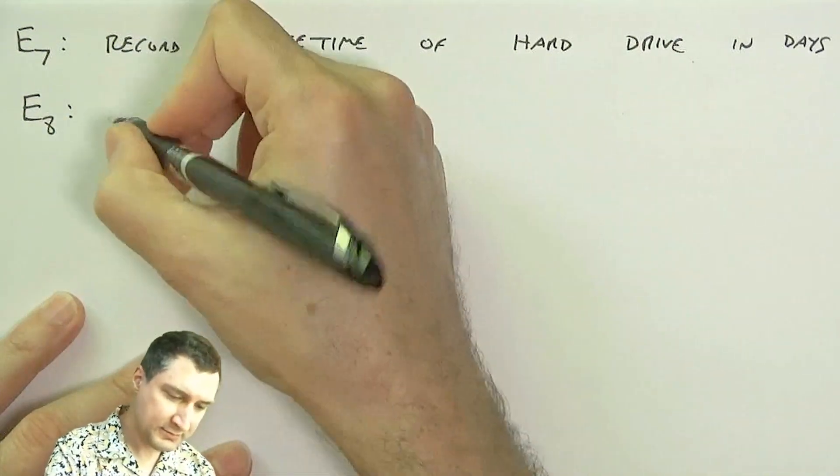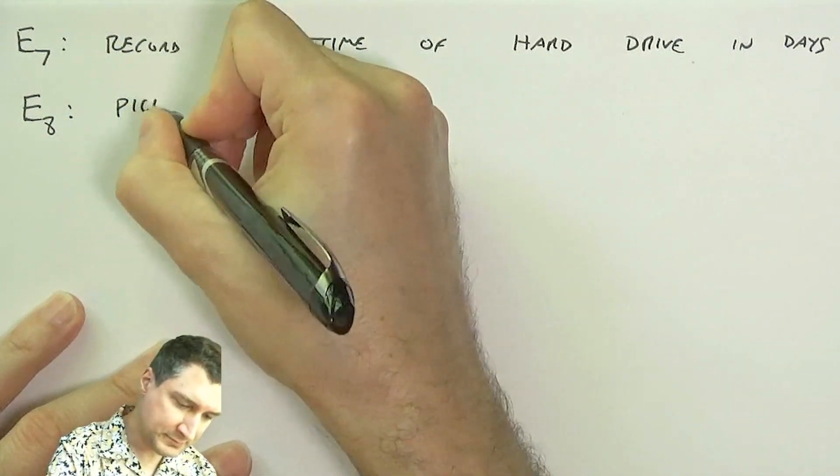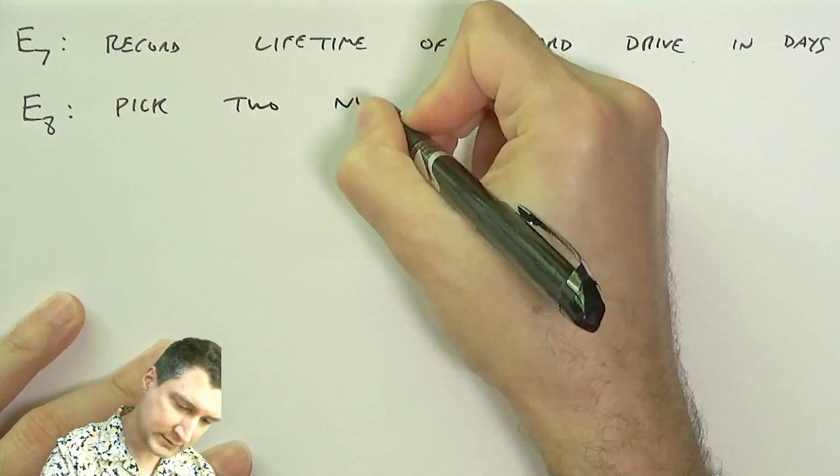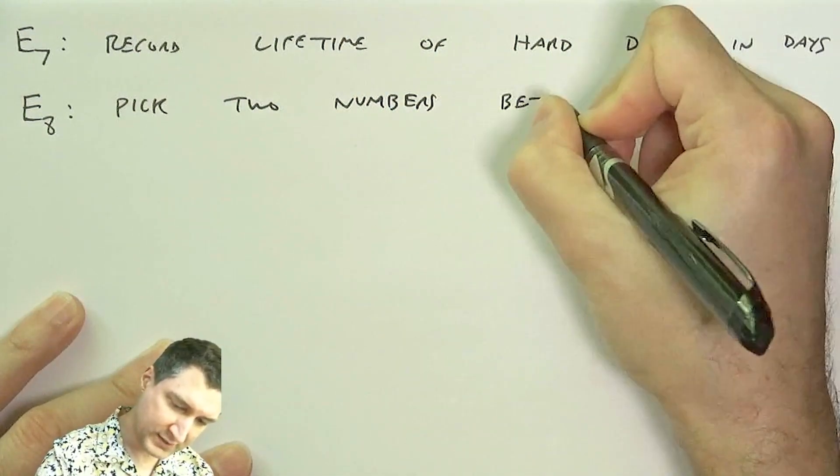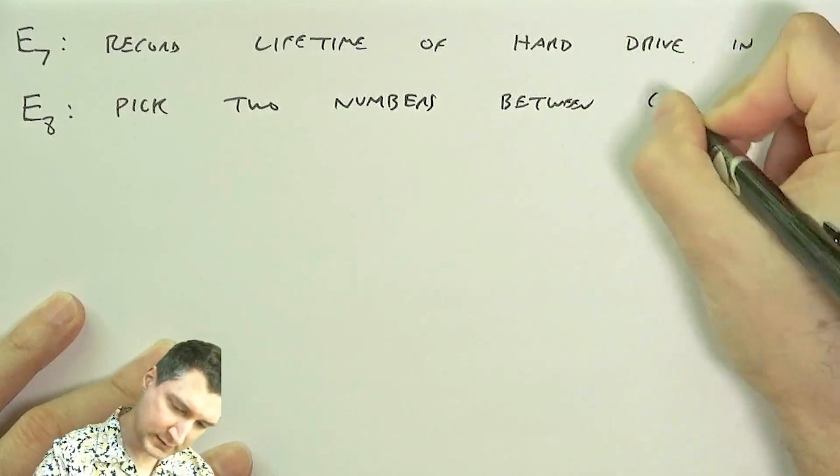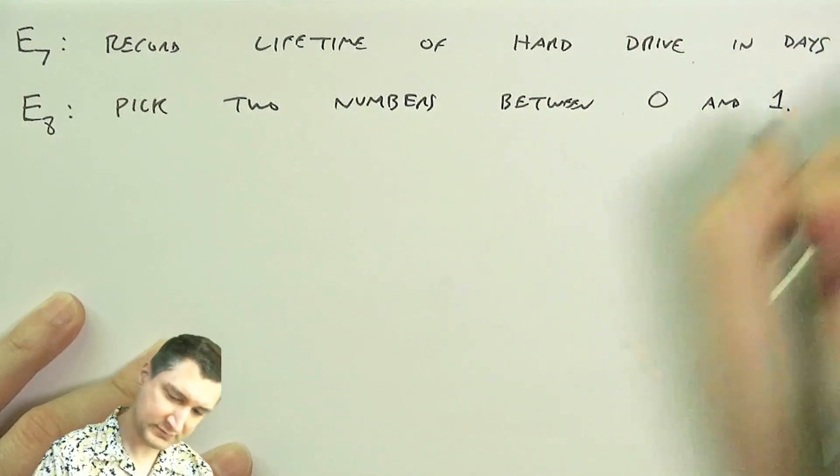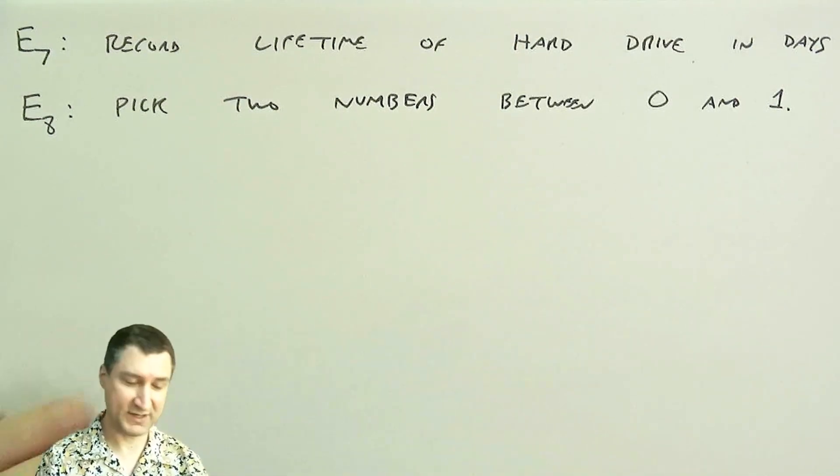I could pick two numbers between 0 and 1, right? So you pick a number, you pick a number, and we record both of those picks.